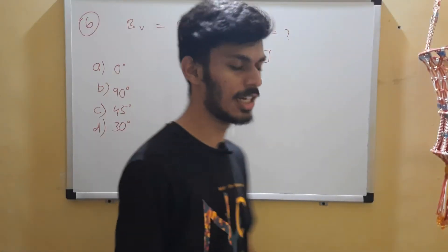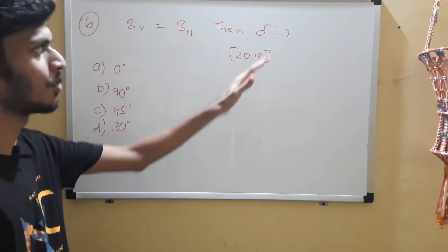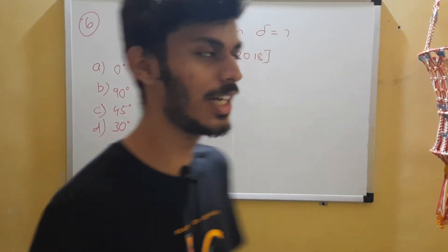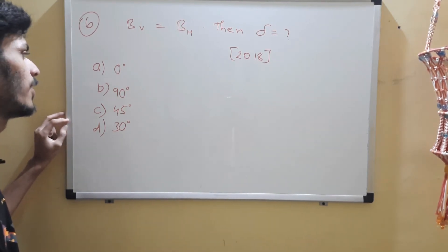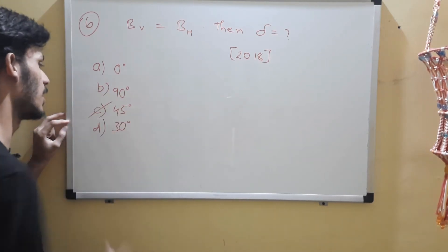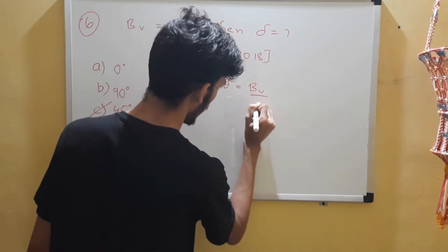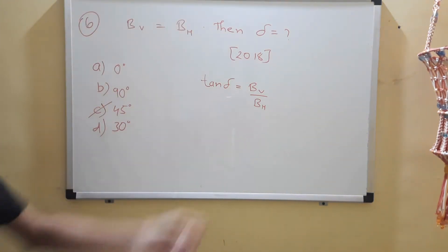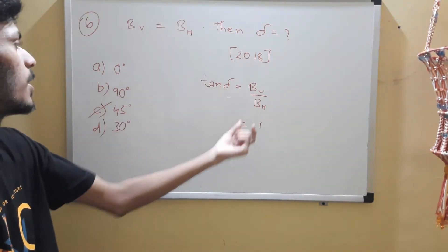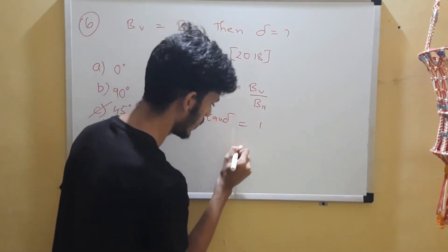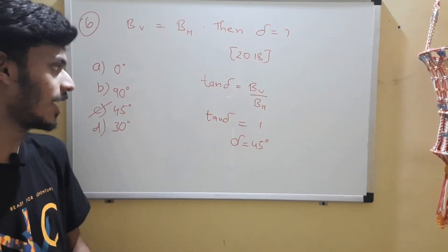Question 6: the vertical component of Earth's magnetic field equals its horizontal component. Find the angle of dip. Using tan(dip) = Bv/Bh — since Bv = Bh, this becomes 1. tan(angle) = 1 means the angle is 45 degrees, since tan 45° = 1.